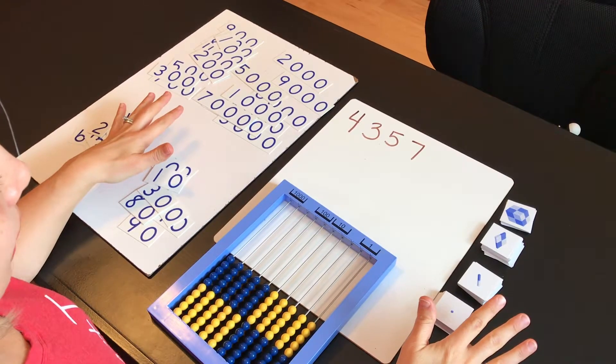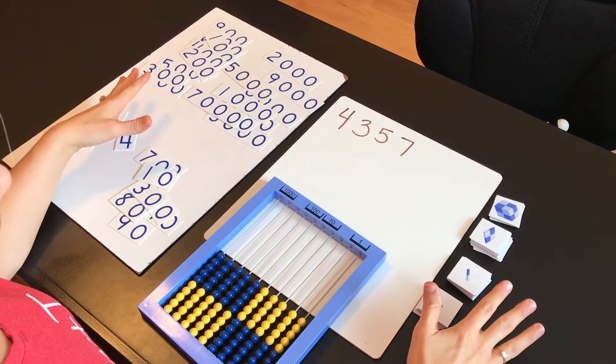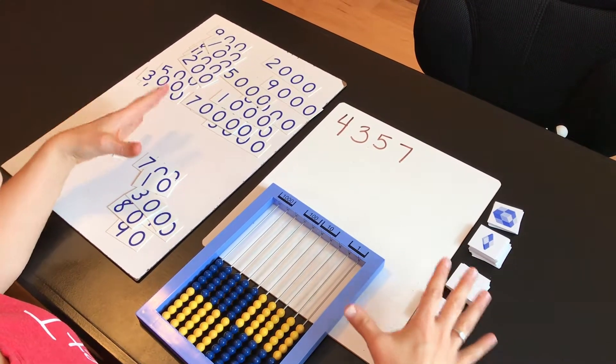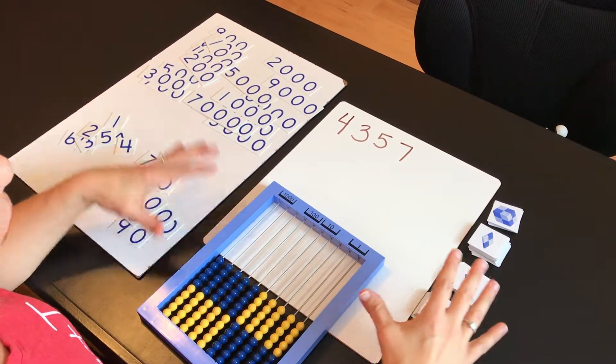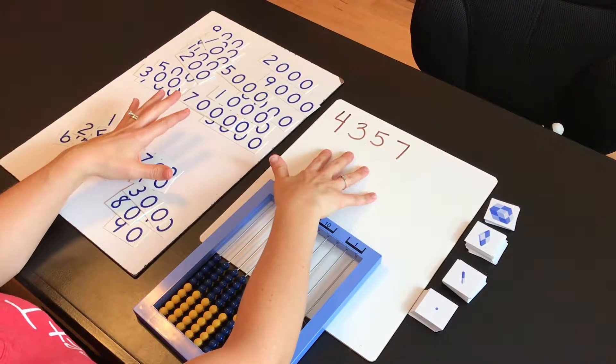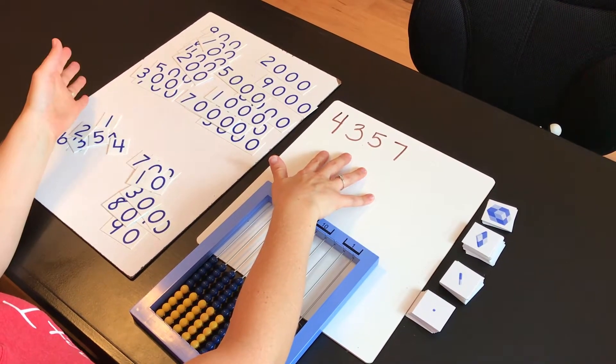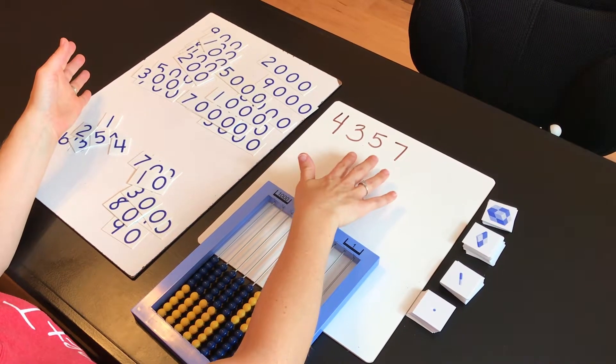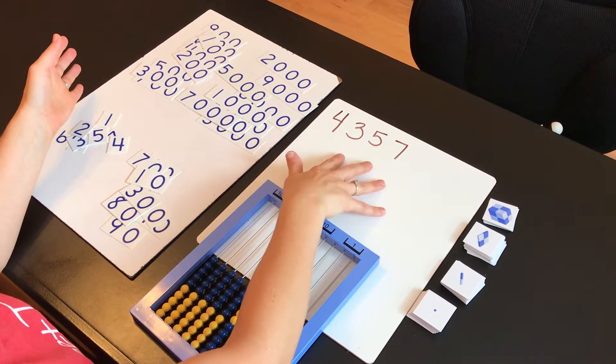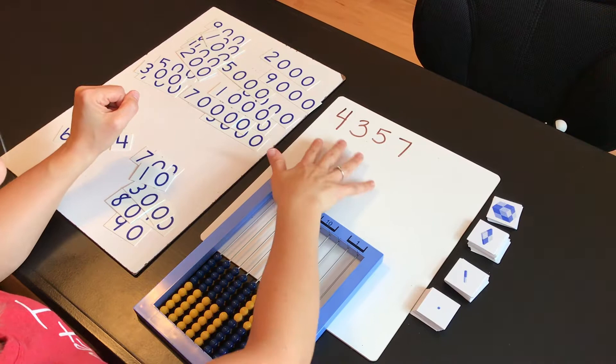So I want to show you an example using all three manipulatives, because this will give your child a full circle example of different ways to visualize this number here. And again, you can do multiple examples. You can start with doing ones, tens, hundreds, and work up to thousands. I'm just going to show you an example of the thousands.